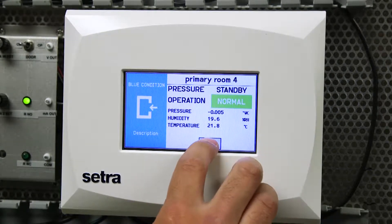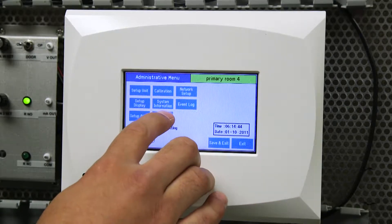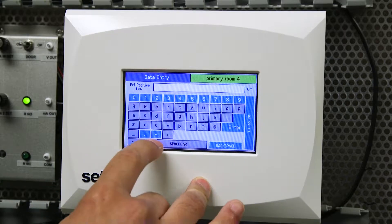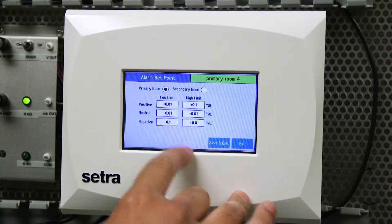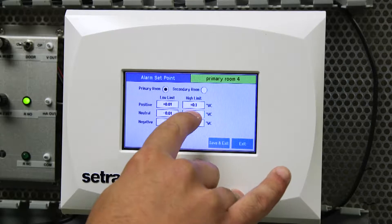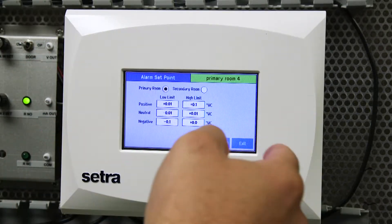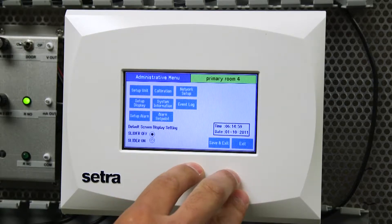First you will go into menu, and set your alarm limit points. In this instance we'll show a positive value of 0.01 for a low limit and then a positive high limit of 0.1. So those will be our positive limits of 0.01 to positive 0.1. We'll hit save and exit.